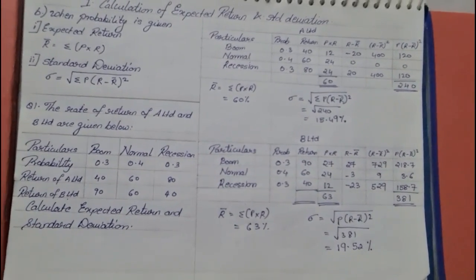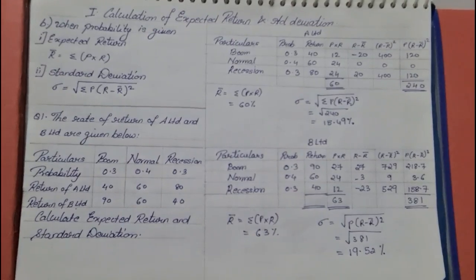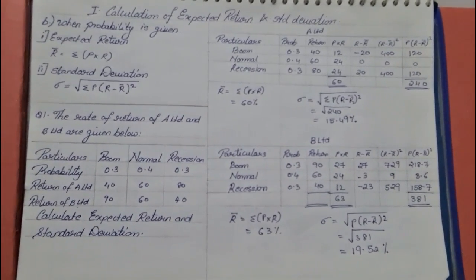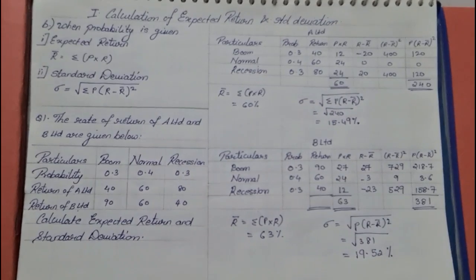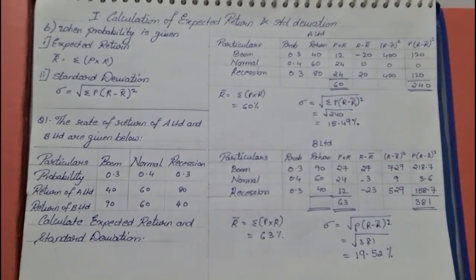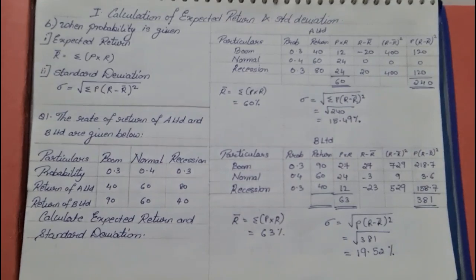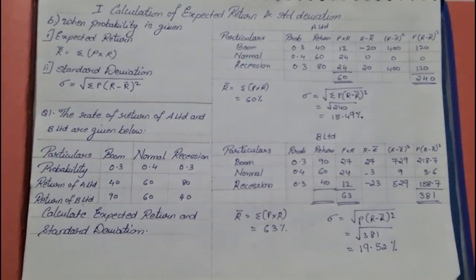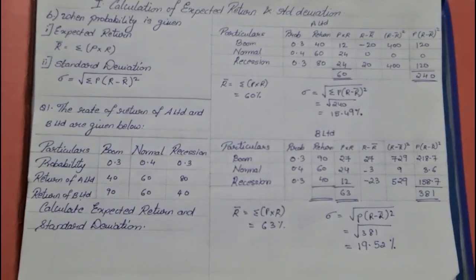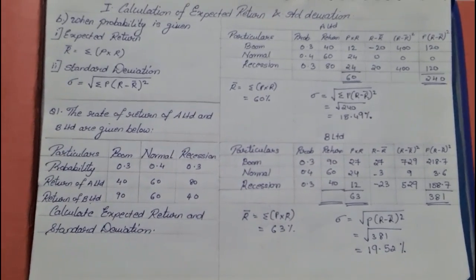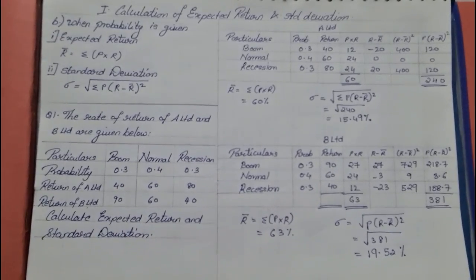With that we were able to solve sums based on expected return and standard deviation when probability was given. We have now completed the first topic under risk and return analysis — expected return and standard deviation under two methods: one when probability is not given, and the other when probability is given. I hope everyone understood this. Stay tuned for other videos. Thank you.